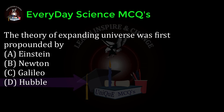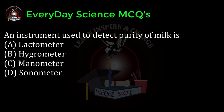The theory of expanding universe was first propounded by: a) Einstein, b) Newton, c) Galileo, d) Hubble. Correct answer: d.